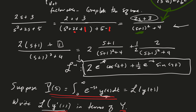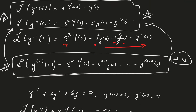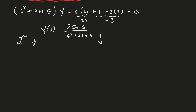We took 2s plus 3, completed the square first, then broke up the fraction and figured out what our constants needed to be in order to invert the transform. The constants are 2 and one half. So y(t) equals 2 times e to the minus t times cosine 2t, plus one half times e to the minus t times sine of 2t.